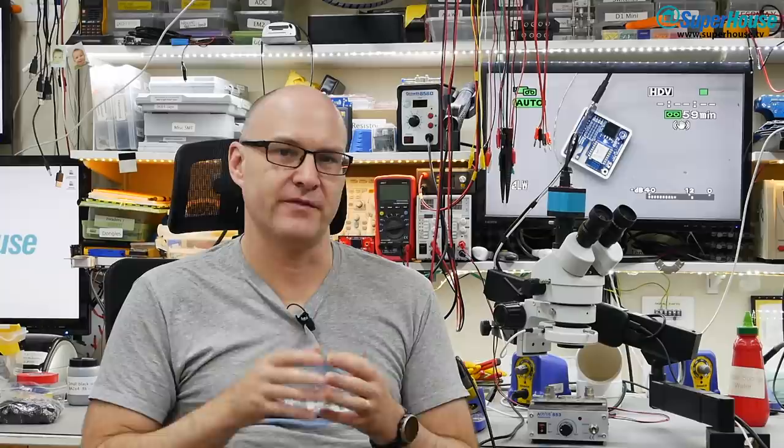Perhaps what we could use is a 2mm pitch 2x3 header. That would give a very small footprint on the board and it also allows you to do clever things like use the edge of a PCB for the programmer to make right angle headers. But then the problem with that is that it's very unlikely that iTead would switch the Sonoff to using a 2mm 2x3 header.